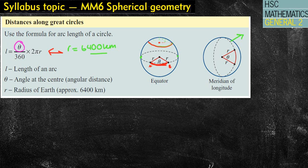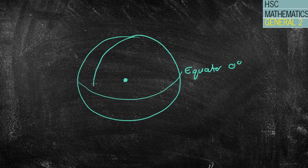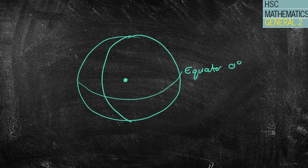I'm going to draw a quick diagram of the Earth to show you what happens. That's my equator line, which is zero degrees. That's going to be my Greenwich Meridian, making that the zero degrees line. That's quite important because that's my starting point.